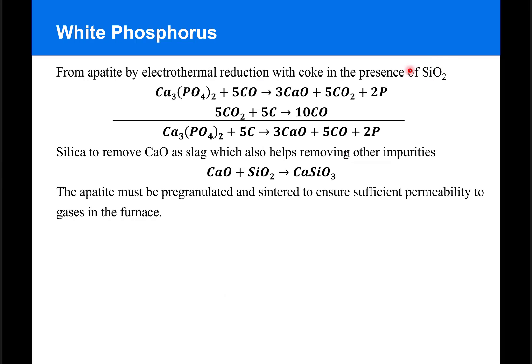According to this equation right here, carbon dioxide reacts with coke to produce carbon monoxide that can then react with the calcium phosphate ore to reduce phosphate into white phosphorus and deposit calcium as calcium oxide.